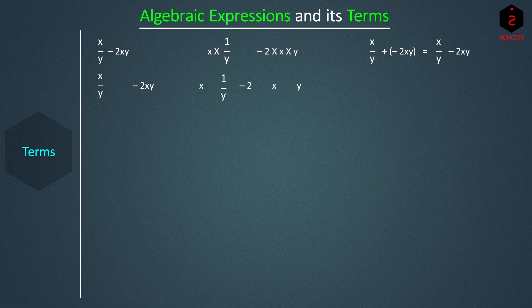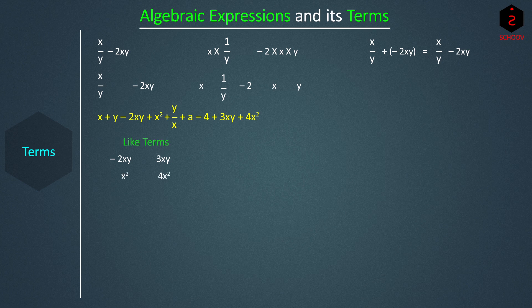So, in our expression, if we add two more terms — 3XY and 4X² — it becomes X + Y − 2XY + X² + Y/X + A − 4 + 3XY + 4X². Clearly, −2XY and 3XY look alike. Similarly, X² and 4X² look alike. Such terms which look alike are called like terms. For example, 2Y/X looks like Y/X, and these are like terms.